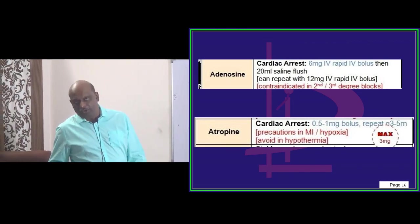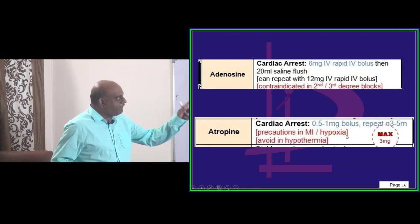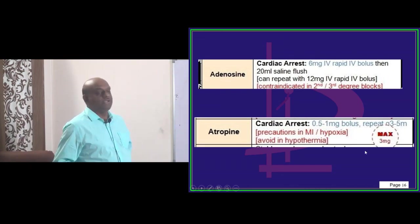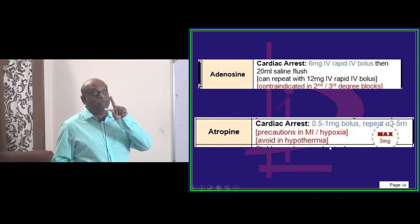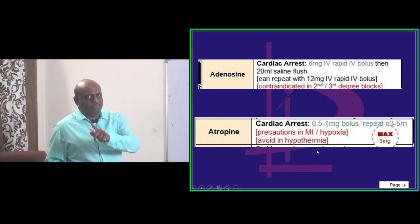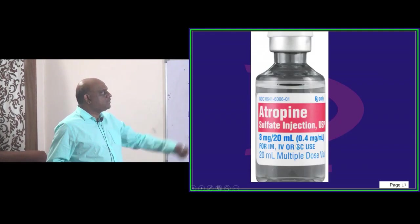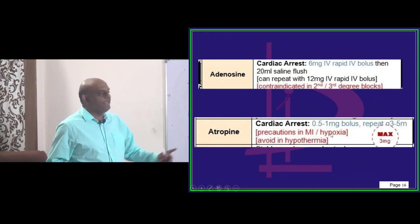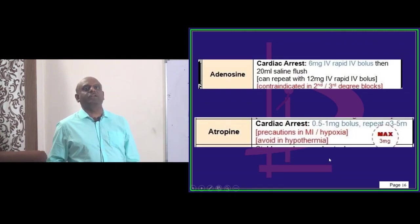So now the question is, how do you want to give the atropine? If there is a cardiac arrest, 0.5 to 1 milligram bolus and you need to repeat after 3 to 5 minutes. Maximum atropine dosage permitted is 3 milligrams and MI or hypoxia, you have to be careful and you try to avoid it if there is a hypothermia. That is the story of atropine. So atropine 8 milligram per 20 ml, 0.4 milligram per ml. So this is 0.5 to 1 milligram bolus, 2 ml, then you can be able to administer and repeat it after 3 to 5 minutes.